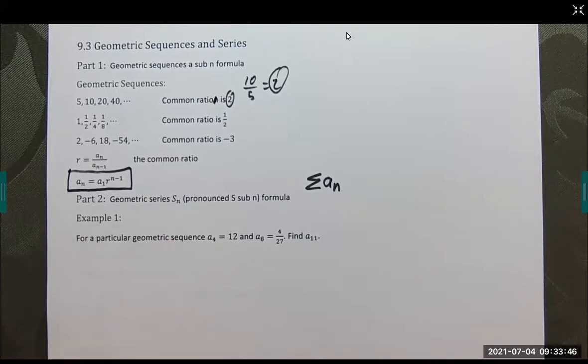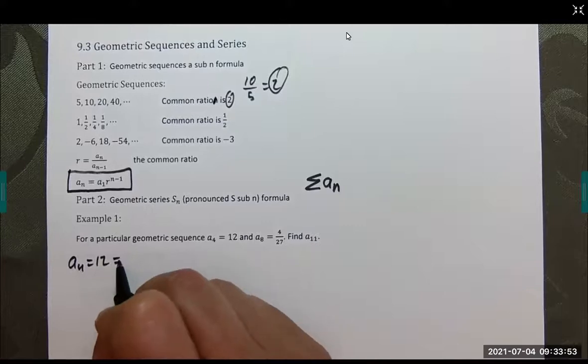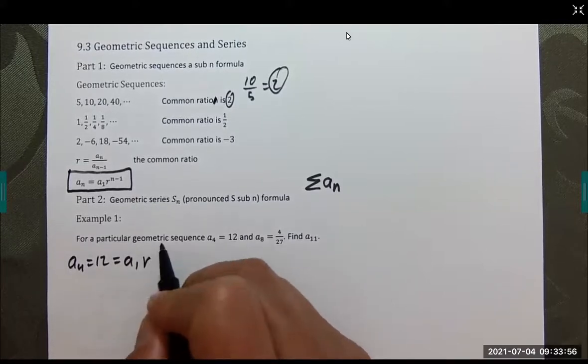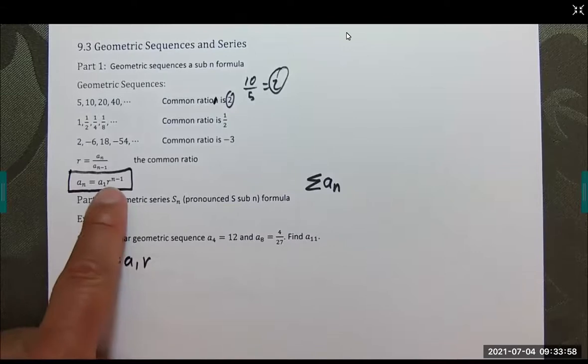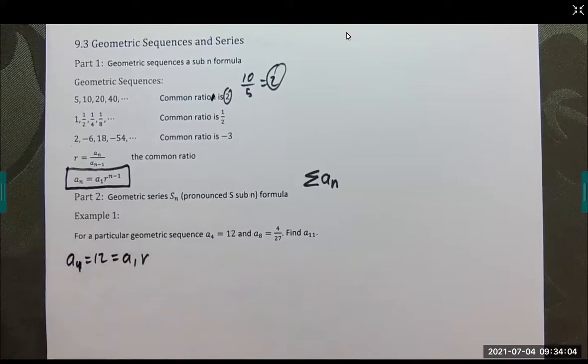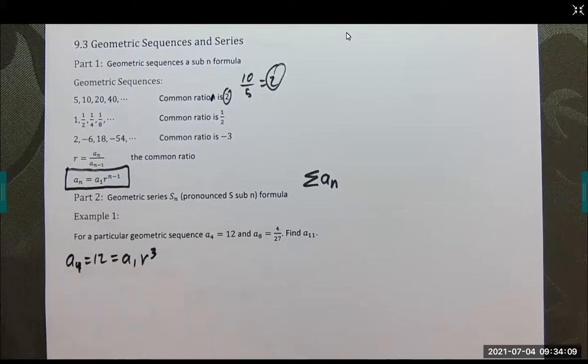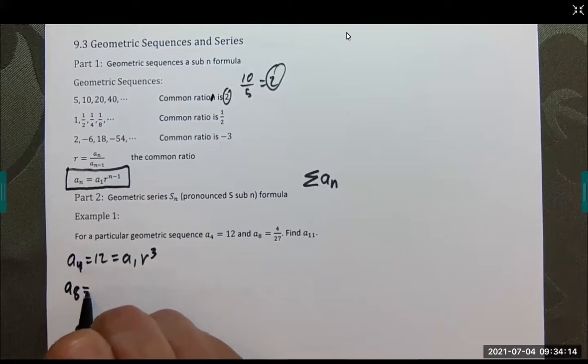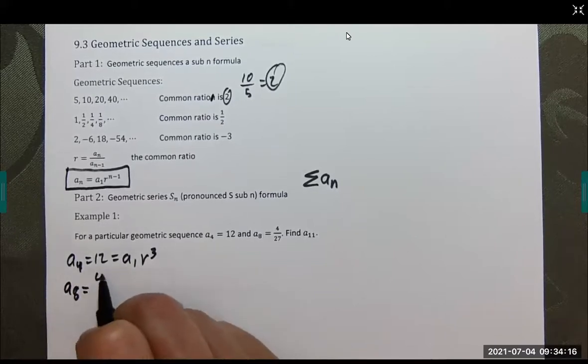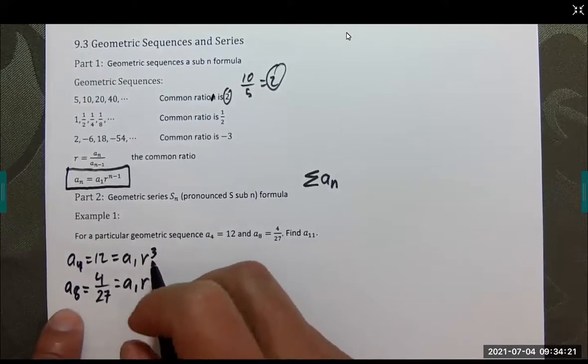Let's jump into it. For a particular geometric series, we have a sub 4 is 12. A sub 4 is 12, which is going to equal in our case, a sub 1 r to the 3rd, because it's n minus 1 and n is 4. We also know that a sub 8 is going to be 4 over 27, which equals a sub 1 r to the 7th.